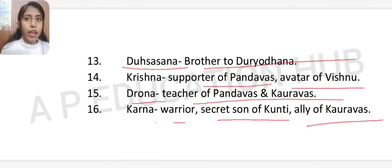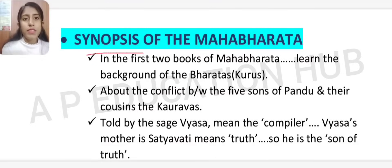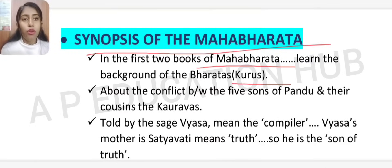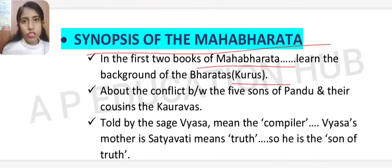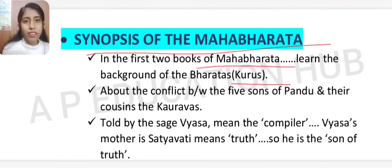Now let's discuss the synopsis — understanding the background is very important for the main story. In the first two books of the Mahabharata we learn about the background of the Bharata and Kuru dynasty. The epic is about the conflict between the five sons of Pandu and their cousins, the Kauravas.